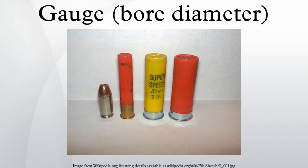Once only found in expensive custom shotguns, overbored barrels are now becoming common in mass-marketed guns. Aftermarket backboring is also commonly done to reduce the weight of the barrel and move the center of mass backwards for better balance. Factory overbored barrels generally are made with a larger outside diameter and will not have this reduction in weight, though the factory barrels will be tougher since they have a normal barrel wall thickness. Firing slugs from overbored barrels can result in very inconsistent accuracy, as the slug may be incapable of obturating to fill the oversized bore.